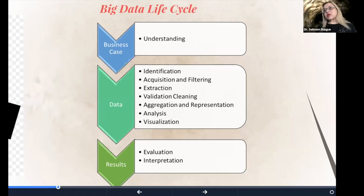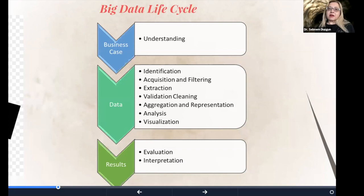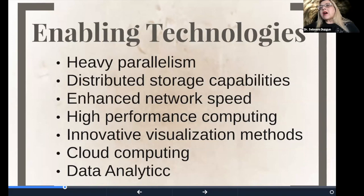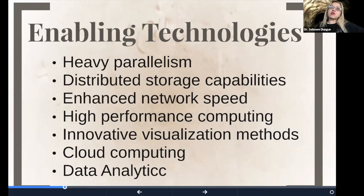Of course, in order to have such a system, you need some enabling technologies, heavy parallelism, distributed storage, and enhanced network speed, especially for real-time processing, high performance computing, new ways of visualization, cloud computing, and data analytics are some technologies that is needed. And there are newly developing infrastructure because currently existing infrastructure are not enough to handle that kind of data. I don't know if you have heard, but Hadoop ecosystem with its MapReduce paradigm, spatial Hadoop, Spark, Magellan, and ArcGIS's Geoanalytics server, and Google's BigQuery GIS are some examples. We are using combination of them.